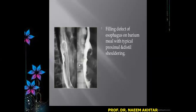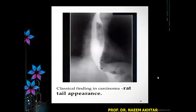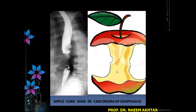Again, this is X-ray barium swallow showing filling defect of the esophagus with typical proximal and distal shouldering — this is the apple core sign in carcinoma of the esophagus. This is the proximal part and distal part of the esophagus, with barium showing a core similar to the apple core sign in carcinoma of the esophagus.